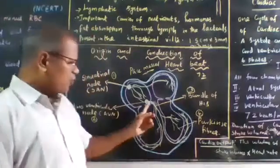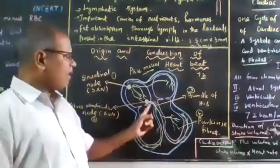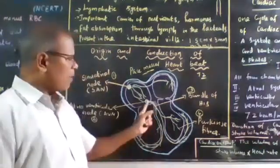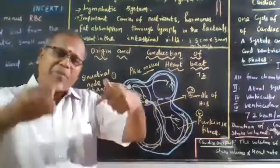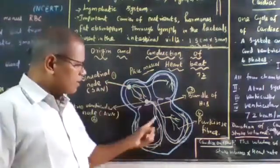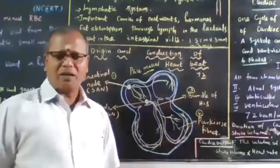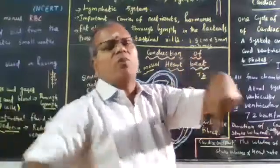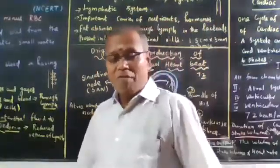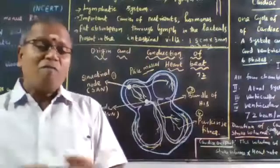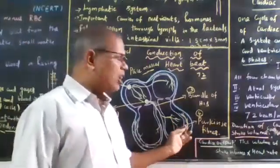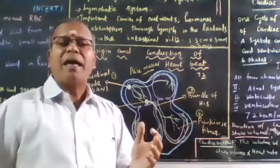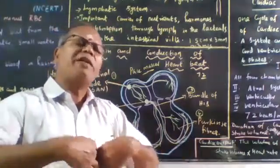From the atrioventricular node, bundle of Hiss is originated. It branches into two: one to the right ventricle and another to the left ventricle. From the bundle of Hiss, fine thread-like structures are originated called the Purkinje fibers. Through the Purkinje fibers, the electrical impulses spread to the entire ventricle walls.